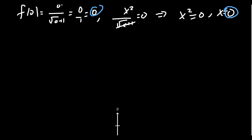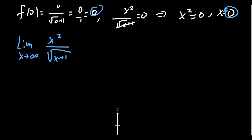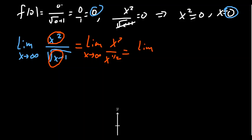Let's consider the end behavior. Taking the limit as x approaches infinity of x squared over the square root of x plus 1, we pay attention to the dominant terms. In the denominator, the dominant term is the square root of x; in the numerator, it's x squared. So this looks essentially like x squared over x to the one-half power, which simplifies to x to the three-halves as x goes to infinity. As a positive power of x, this goes to infinity — the graph points up on the right-hand side.